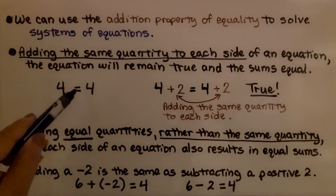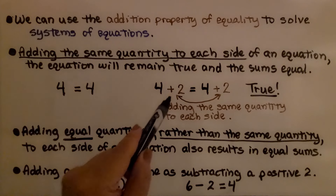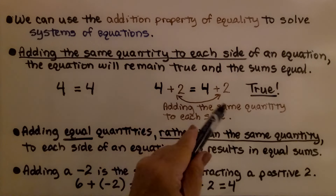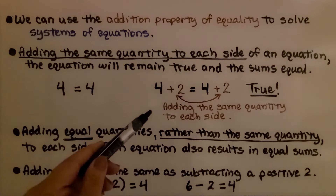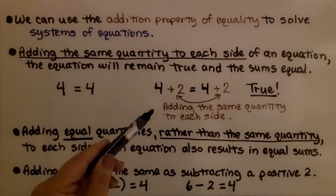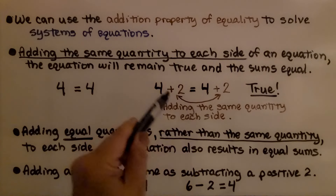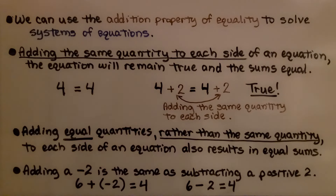If we have four equals four and we add two to both sides of the equal sign, it's still going to be true. We're adding the same quantity to each side, so the sums are going to be equal. Adding equal quantities rather than the same quantity to each side of an equation also results in equal sums.